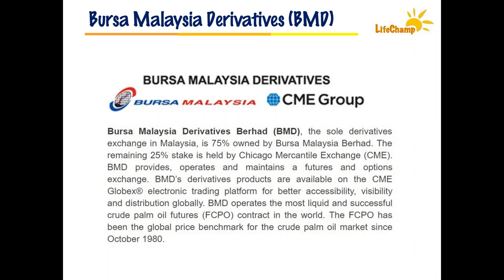The Bursa Malaysia Derivatives — the word 'derivatives' comes from 'derived demand.' Whatever options or futures listed in the Bursa Malaysia Derivatives market is actually a derived demand, meaning these listings have underlying commodities or financial instruments. Bursa Malaysia Derivatives is 75% owned by Bursa Malaysia Berhad and 25% owned by the Chicago Mercantile Exchange. We are very proud that our FCPO is the most liquid and successful crude palm oil futures contract in the world — the pricing set here in BMD is the benchmark for world crude palm oil price.